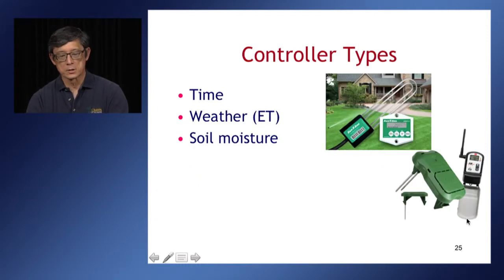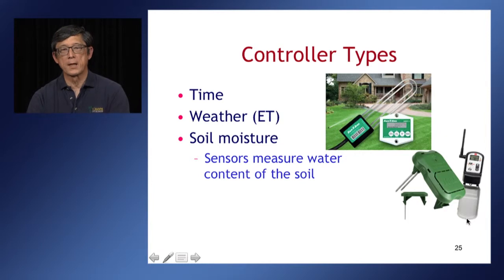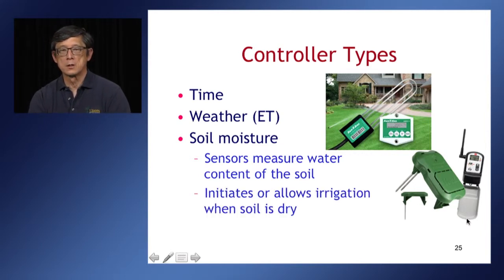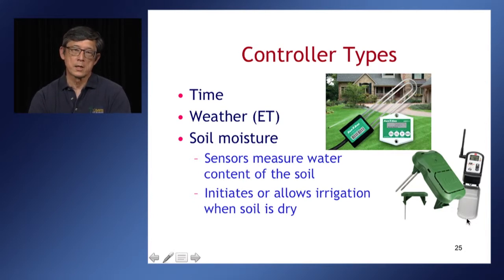Another controller type uses soil moisture measurement. These controllers rely on sensors installed in the landscape that actually measure the amount of moisture in the soil. Based on soil dryness or wetness, it will initiate an irrigation when the soil is dry. Some controllers are also able to terminate irrigation — once the soil is wetted to a preset level, it will stop the irrigation.